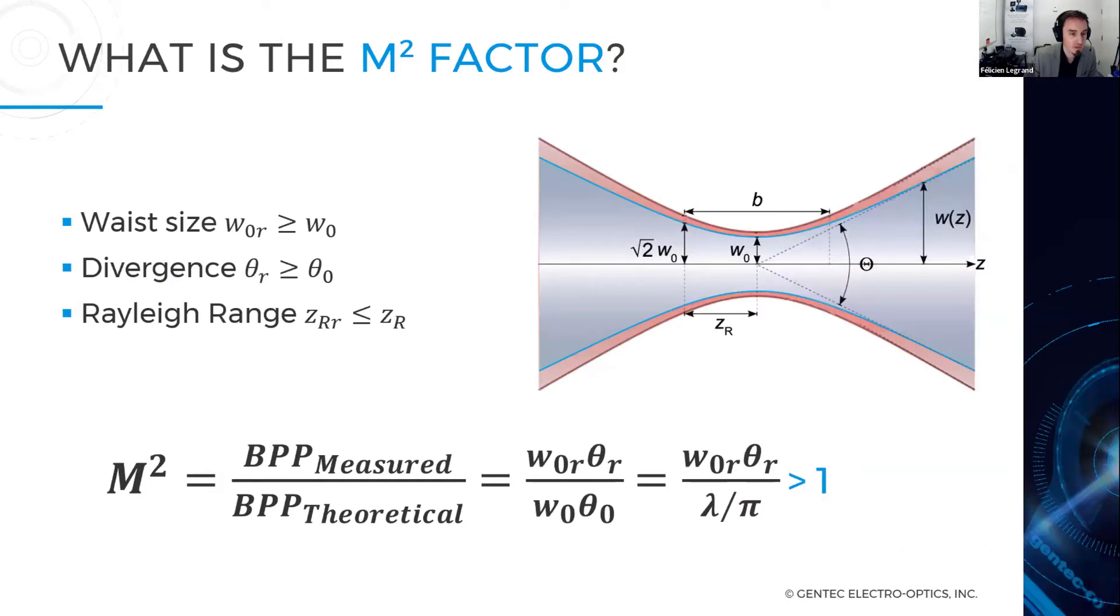A couple of equations are really simple. Once you know your beam waist w₀ and your divergence θ₀, you just multiply those two quantities and you get what we call the beam parameter product, BPP. The BPP measured w by θ, and you divide this by the beam parameter product of a theoretical Gaussian beam, which equals by definition λ/π, the wavelength of the laser beam divided by π.